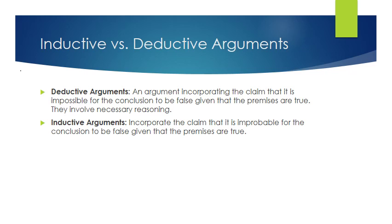We can't say absolutely that there are no unicorns, but from what we've seen — having scoured the entire world — we've not seen any, so they're probably not existent. A deductive argument, by contrast, would be something like: all bachelors are single, and Mark is a bachelor, therefore Mark is a man. Deductively, if Mark is a bachelor — and a bachelor by definition is a single man — it's not possible for Mark to be a woman.